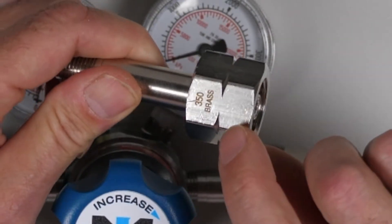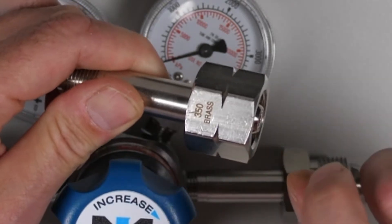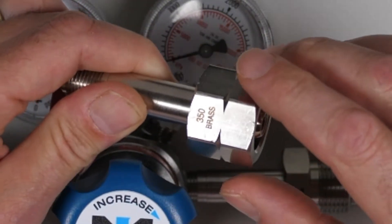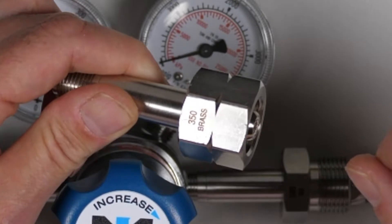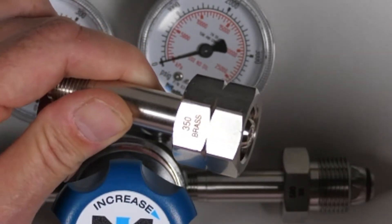The CGA 350 fitting has notches on the nut which shows that the nut has left-handed threads. CGA 350 is for flammable gases like hydrogen, methane, and carbon monoxide.